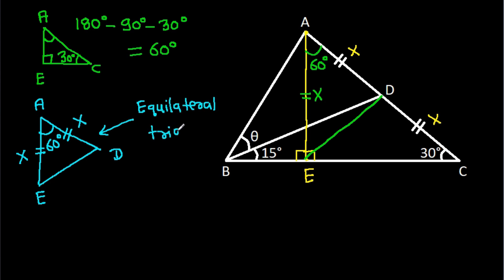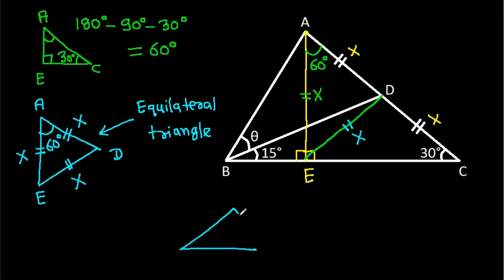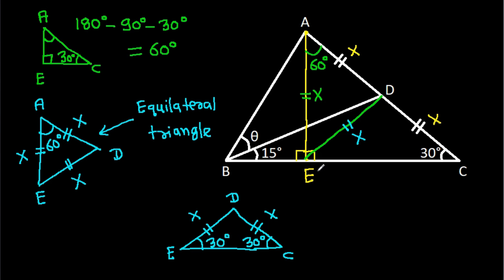Since triangle ADE is equilateral, DE is also equal to X. Now in triangle CDE, we have CD equal to DE equal to X, so the base angles are equal. The angle DCE is 30 degrees, so angle DEC is also 30 degrees.